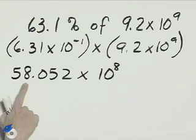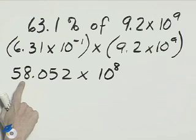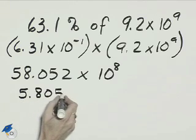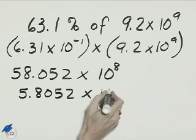Once again, we need to change this to scientific notation, so this decimal needs to go between the 5 and the 8. That will make it 5.8052 times 10 to the 9th.